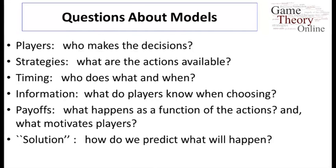Information is another key ingredient: what do players know when they're choosing? What kind of history have they observed? What do they know about other players' payoffs or their own payoffs? And more generally, payoffs: what happens as a function of actions? How do we describe who gains and who loses? What motivates players and what do they really care about? Ultimately, some of the most interesting parts of game theory come in trying to solve games — making predictions of actual behavior using solution concepts.